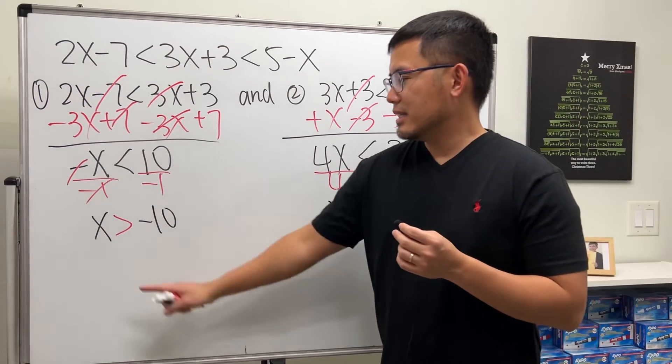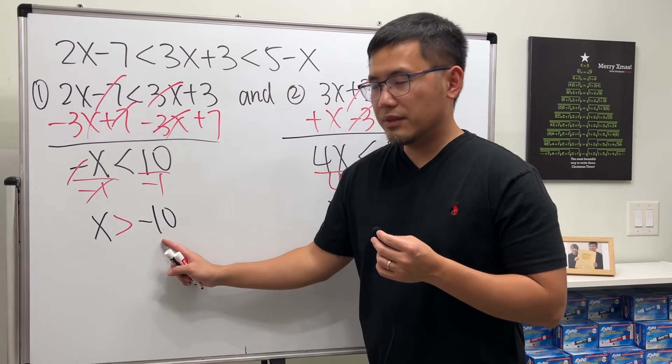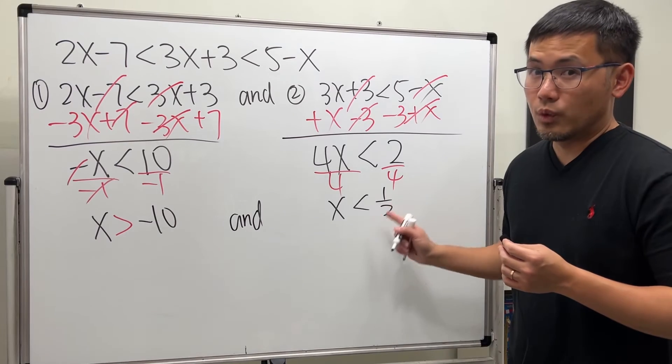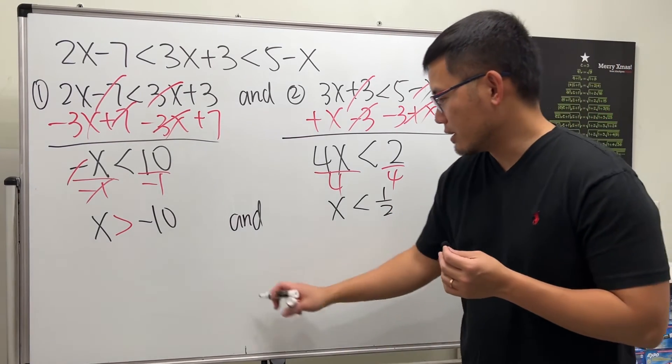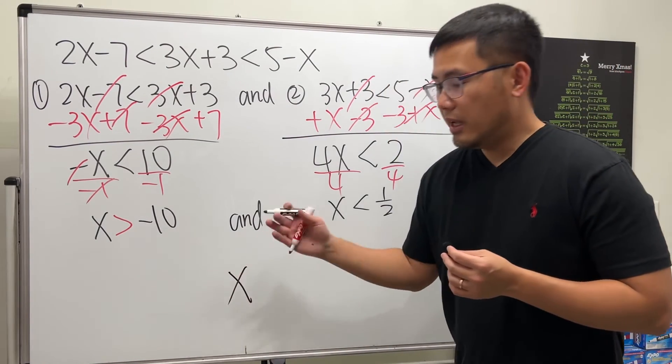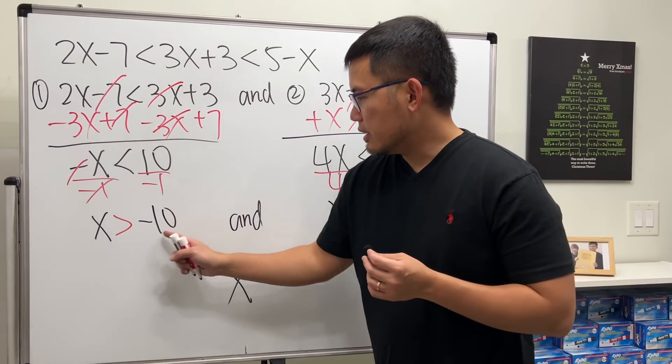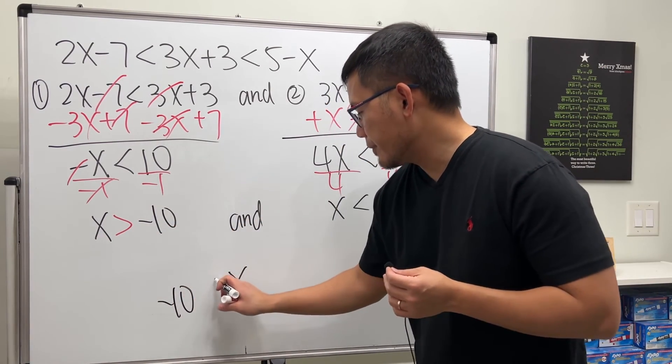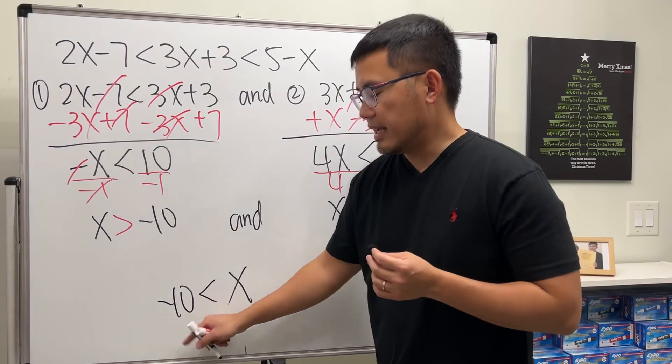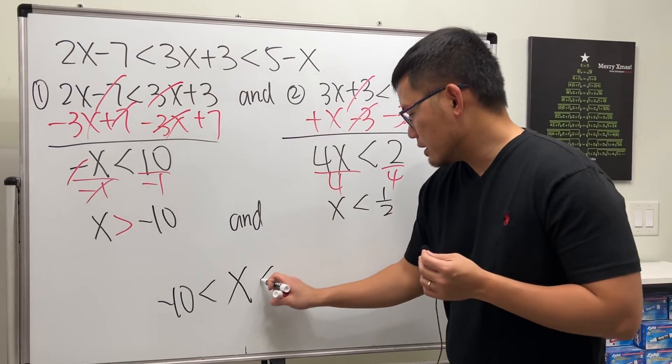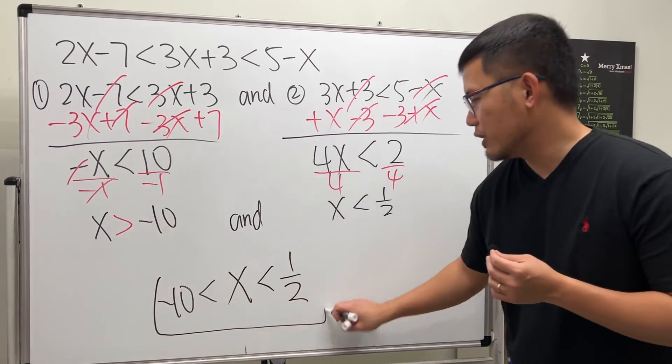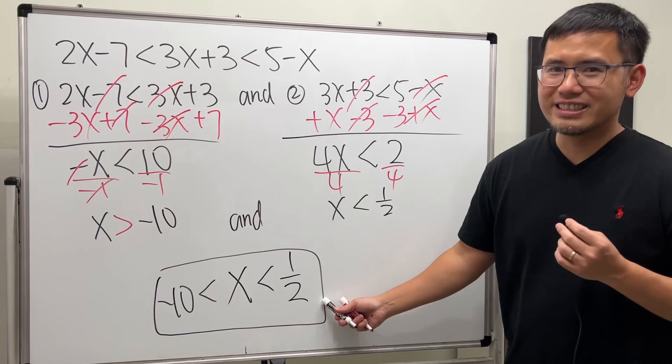Now check this out. x is greater than negative 10. And in the meantime, we also have to make sure x is less than 1 half. So how can we write it? Answer. x in the middle. Negative 10, right? X has to be greater than that. So we can put negative 10 here. Here, x is greater than negative 10. Read it backwards. And then here we have less than 1 half. So this is the answer.